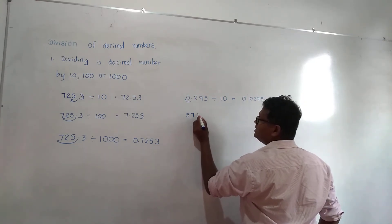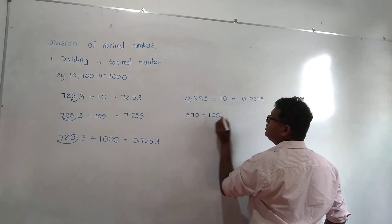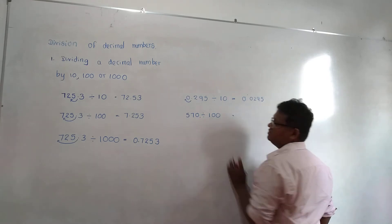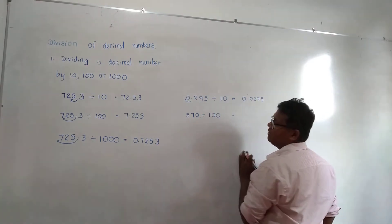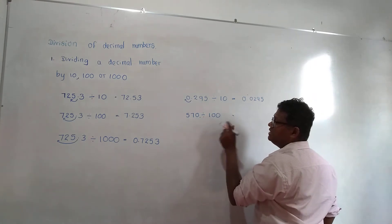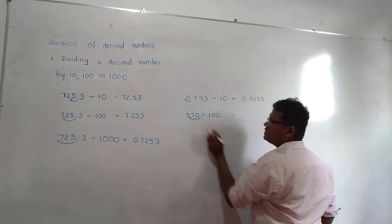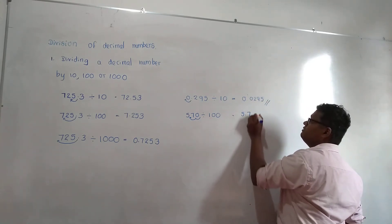570 divided by 100. Now where is the decimal point of this number? It is here. You can't see the decimal place; it is in the right side corner. Now 570, when you divide by 100, it is going forward two times. That means 5.7.